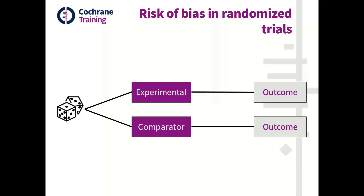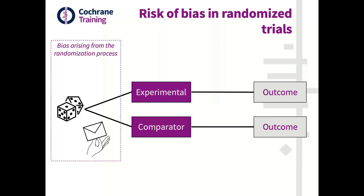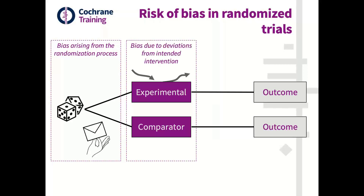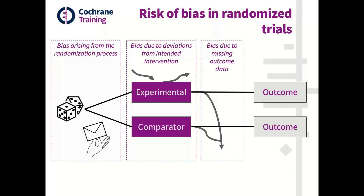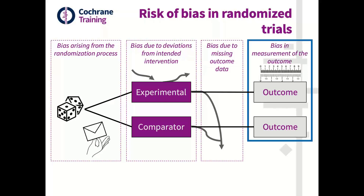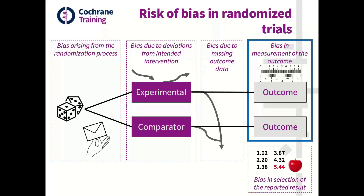Some reminder about the different domains tackled by the risk of bias tool. The first is the bias arising from the randomization process. Then we have the bias due to deviations from intended interventions, the bias due to missing outcome data, and today we will focus on bias related to the measurement of the outcomes. There will be another webinar specifically dedicated to bias in selection of the reported results.